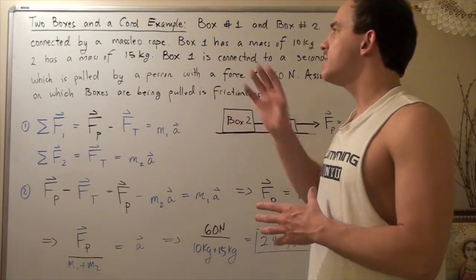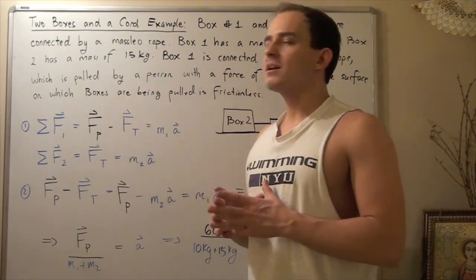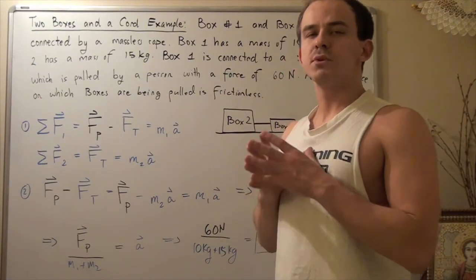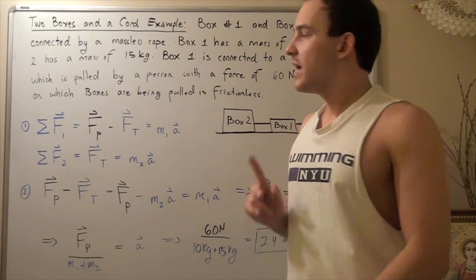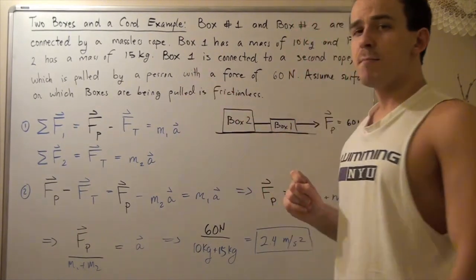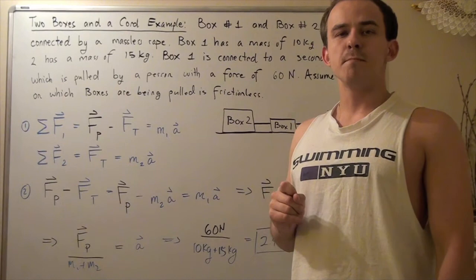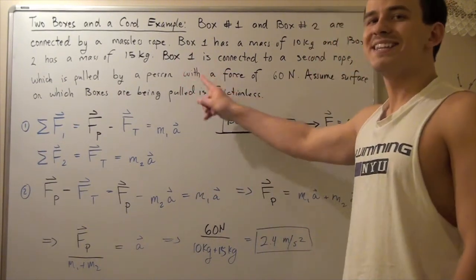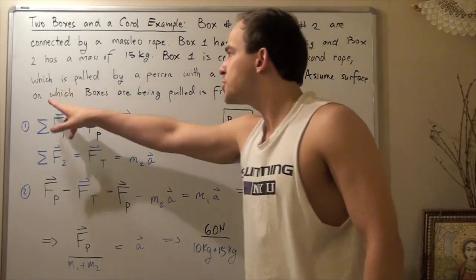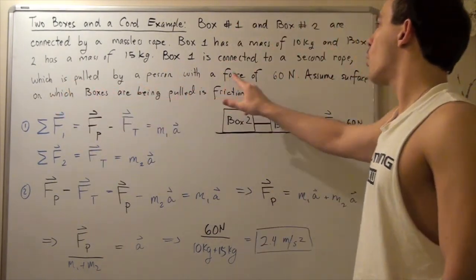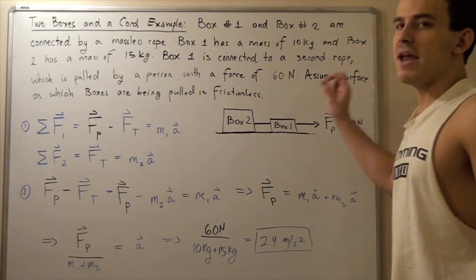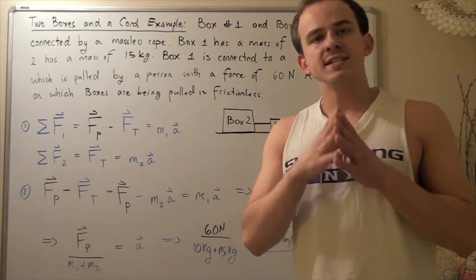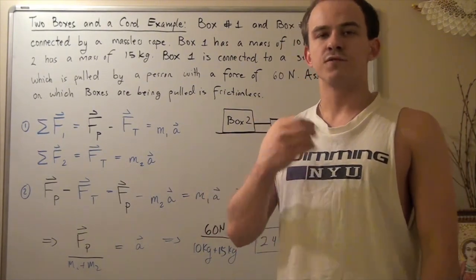Let's examine the following example that deals with two boxes and a cord. Suppose box number one and box number two are connected by a massless rope. Box number one has a mass of 10 kilograms while box number two has a mass of 15 kilograms. Box number one is also connected to another rope which is pulled by a person with a force of 60 Newtons. We'll assume that the surface along which the two boxes are being pulled is frictionless, so we can ignore forces of friction.